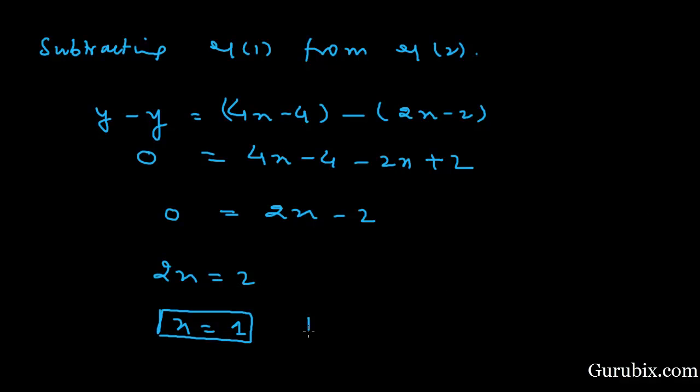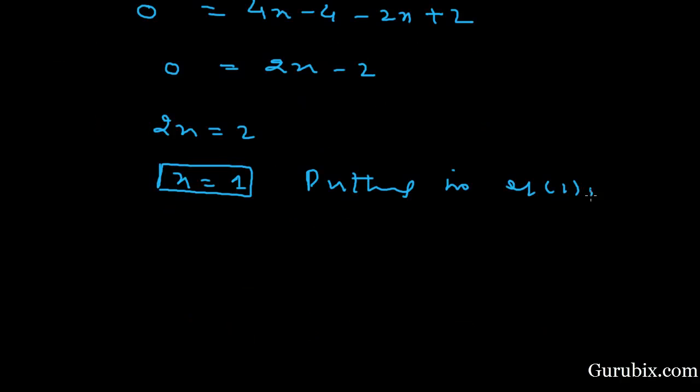And now we shall put this value in equation number 1 to find the value of Y. By putting in equation number 1, we get Y equals to 2 into 1 minus 2. This means 0.